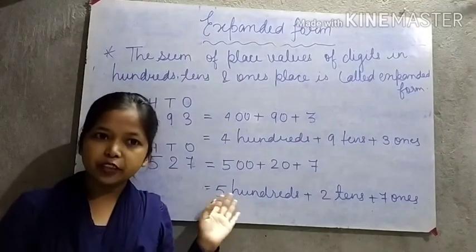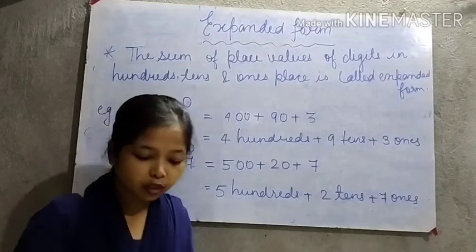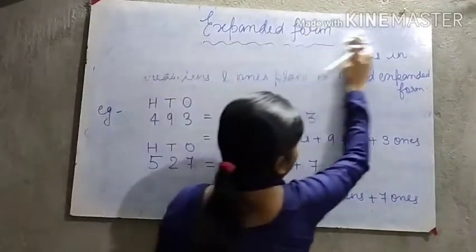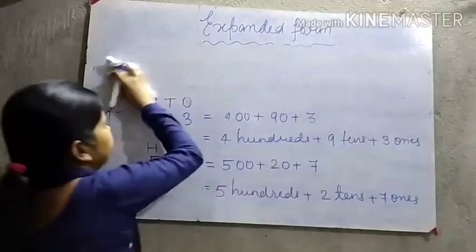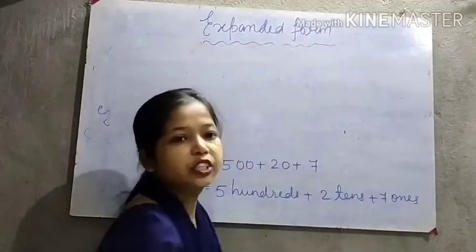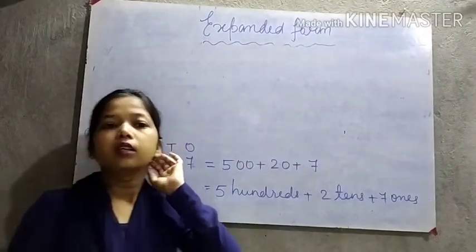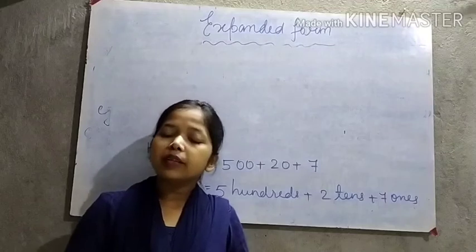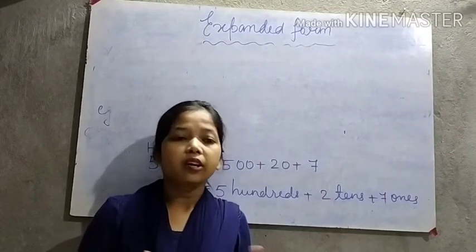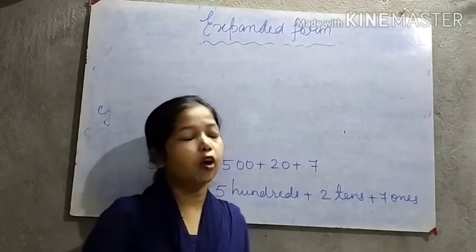I hope you are clear with expanded form, children. Now let's come to short form. What do we mean by short form? When the place values of the expanded numbers are combined, we get short form or standard form. We can say that short form is the reverse of expanded form.